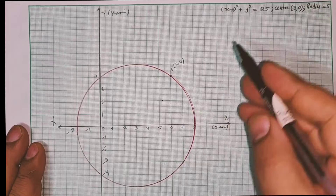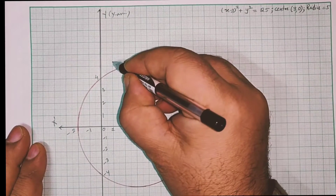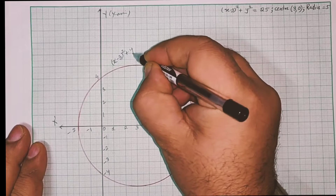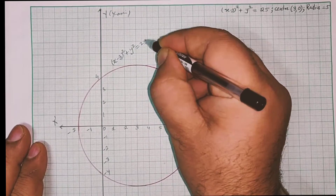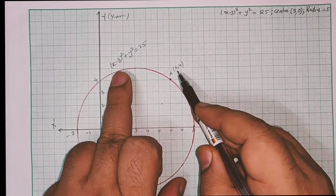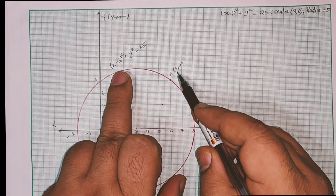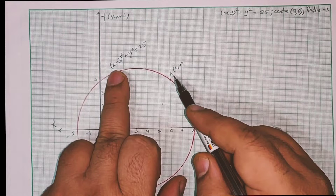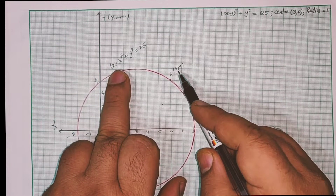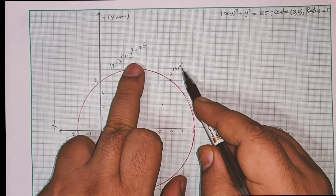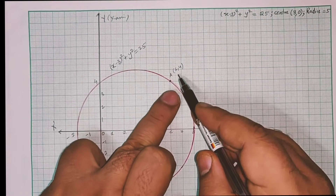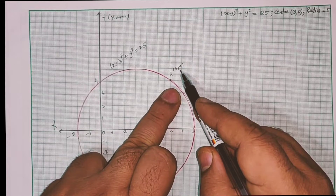Let me verify algebraically that (6,4) satisfies the equation (x−3)² + y² = 25. Substituting: (6−3)² + 4² = 3² + 4² = 9 + 16 = 25. So this point lies on the circle.